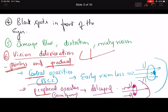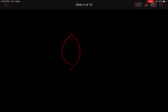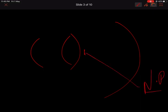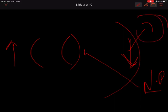The most important central opacity is posterior subcapsular cataract (PSC), also known as cupiliform cataract. In this condition there is early loss of vision. To understand why, consider the concept of the nodal point. Light rays from an object focus on the retina forming an inverted image, which the brain processes as erect. This image formation passes through the nodal point, which is a point very close to the posterior part of the lens.